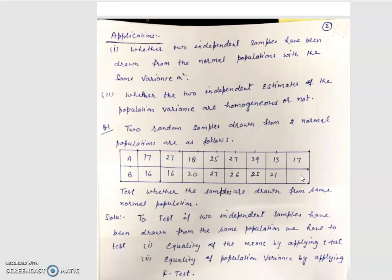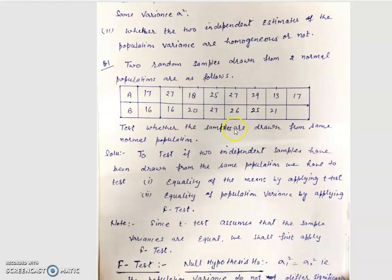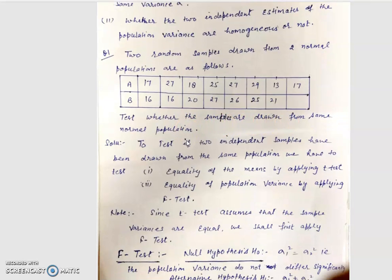Here is an example based on the F test. Two random samples are drawn from two normal populations. We have two samples A and B. For sample A, N1 equals 8, and for sample B, N2 equals 7. We need to test whether the samples are drawn from the same normal population or not.